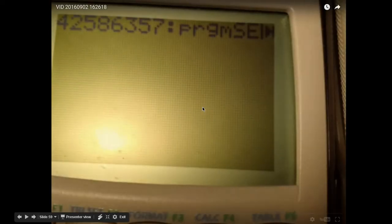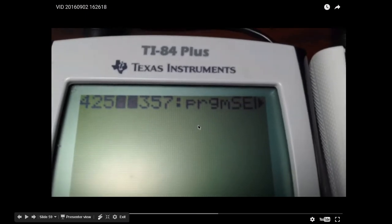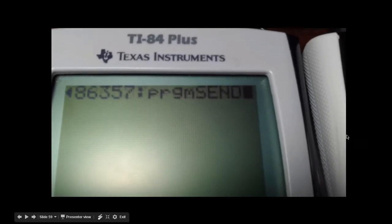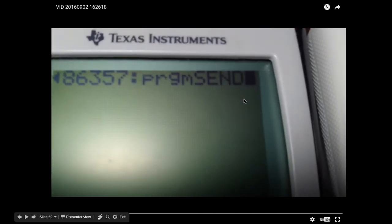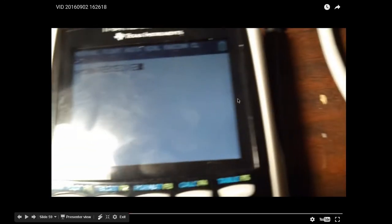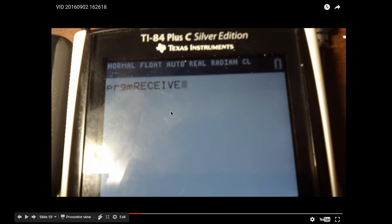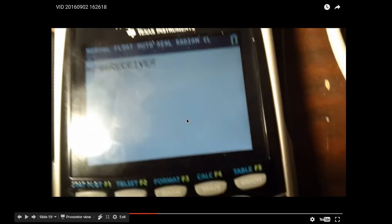So here I have an example, and I'm going to use this code to send the integer 42586357. Then I'm going to put colon program send, and that will send it out the I/O port. But before I send it out the I/O port, I have to run program receive on the other calculator. So even though I have the TI-84 Plus Color Silver Edition here, you can actually run receive on the other calculator and send on this one, and it'll still work just fine.